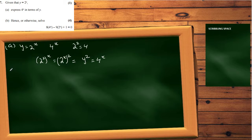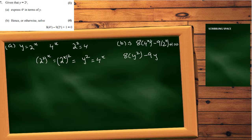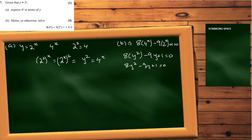The equation is 8 times 4 to the x minus 9 times 2 to the x plus 1 equals 0. I substitute y squared for 4 to the x and y for 2 to the x, giving 8y squared minus 9y plus 1 equals 0. This is now a quadratic equation.